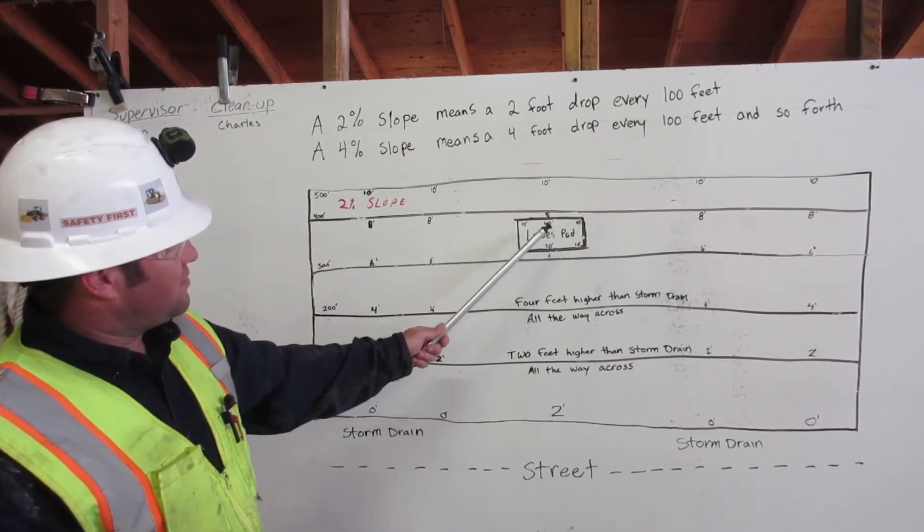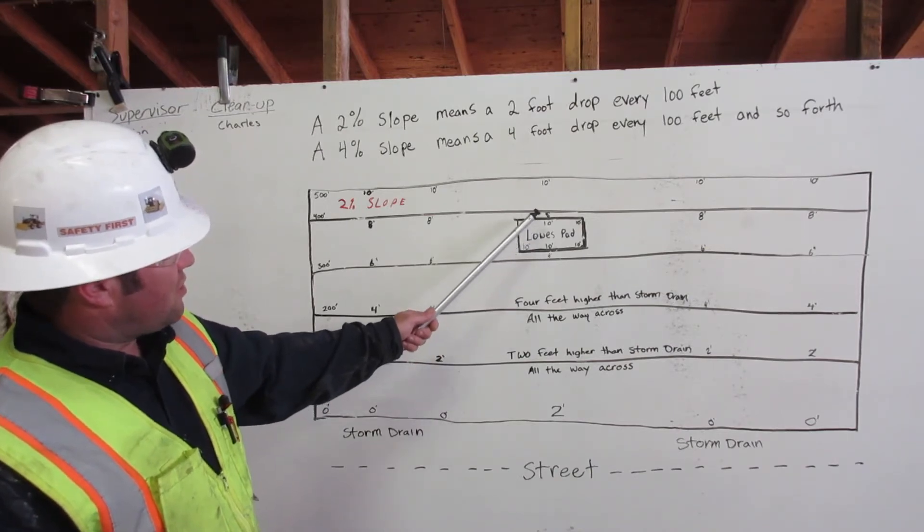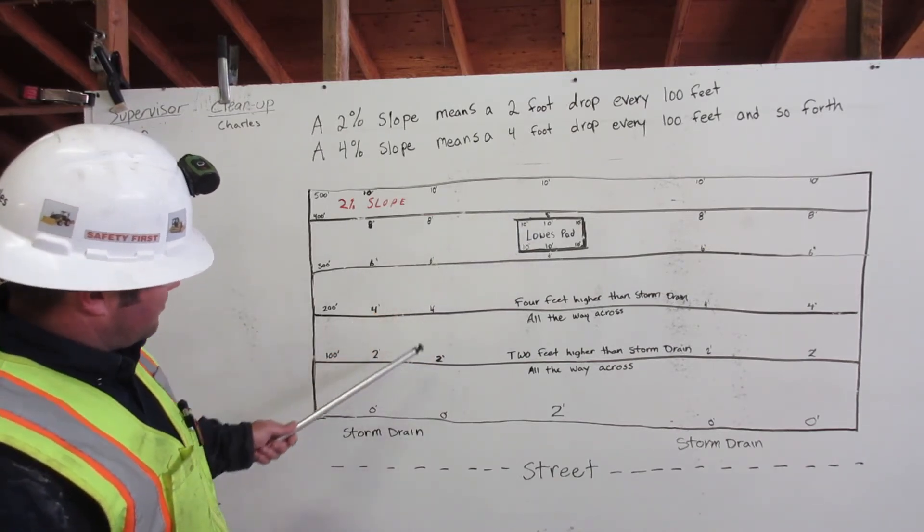The Lowe's pad needs to be 2 feet higher so that all the water drains off and down to the storm drain.